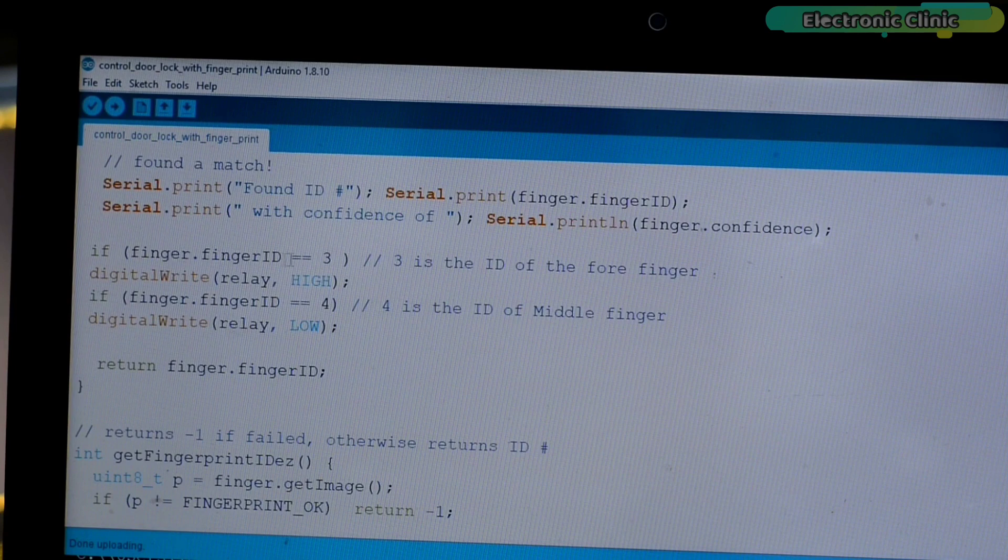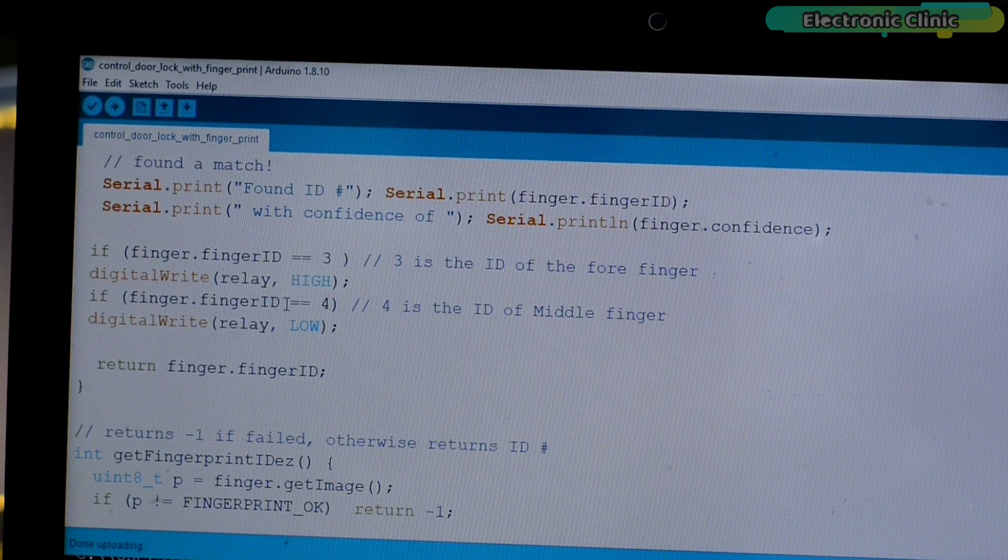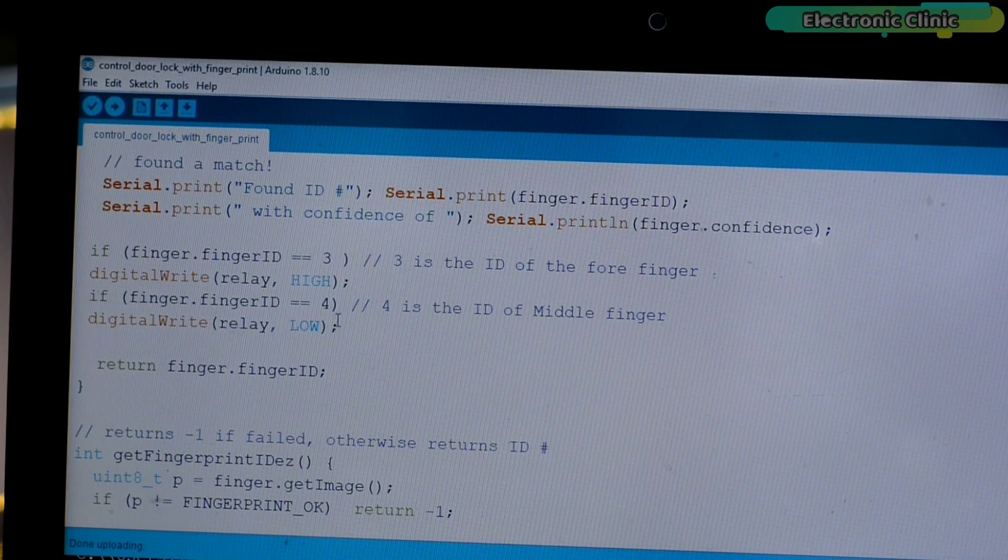If finger.fingerID equals 3, then open the lock. And if you remember, 3 is the ID of my fourth finger. Similarly, if finger.fingerID equals 4, then close the electronic lock. And you know 4 is the ID of my middle finger.